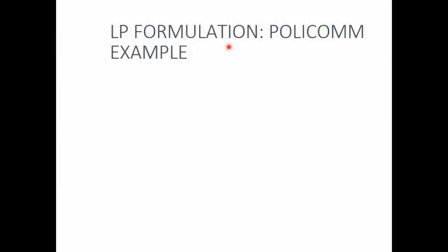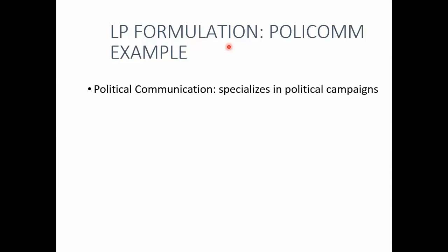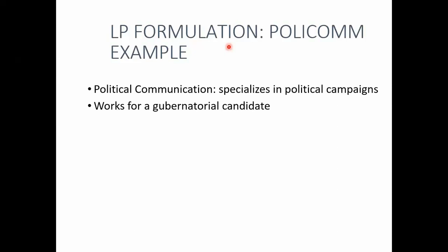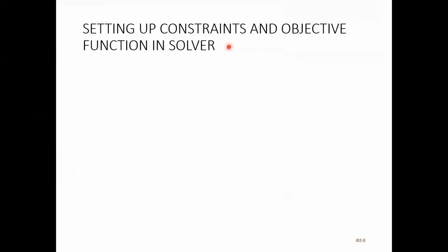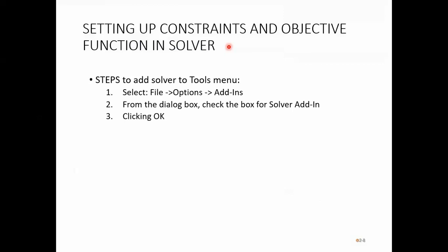Let's look at one example that will make things clear. This particular example is a political communication example — we have all seen political campaigns. This case is about a candidate who is fighting a general election, and we have a data set given to us. We will follow these steps: step one is we define the decision variables, step two we formulate the objective function, step three we identify the constraints and make them non-negative.